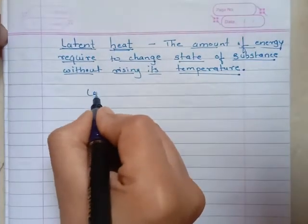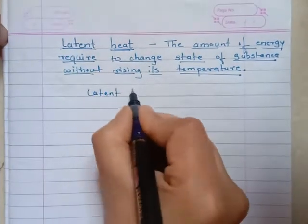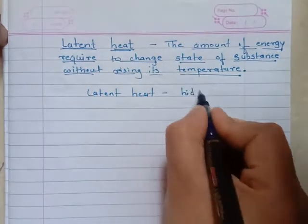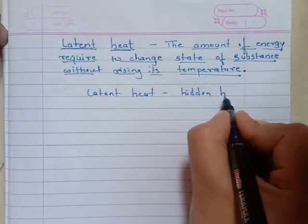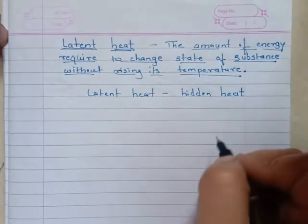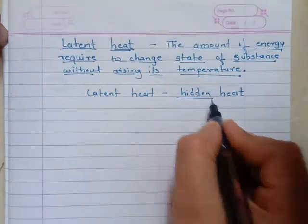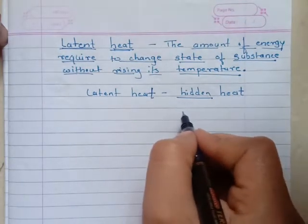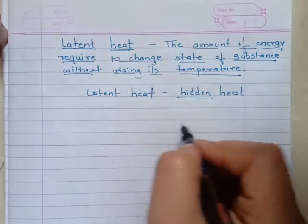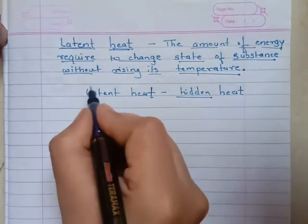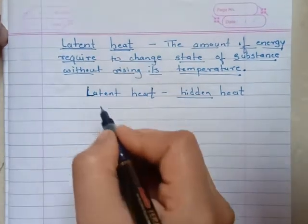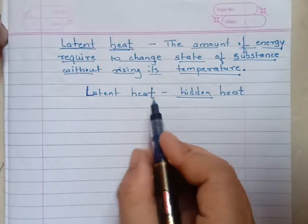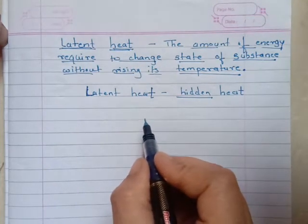This latent heat is also known as hidden heat. Why is it called hidden? Because the thermometer cannot detect the temperature of a substance when the latent heat is supplied to it. It means when we heat a particular substance, for some time the temperature of that substance remains constant — the thermometer shows constant temperature.